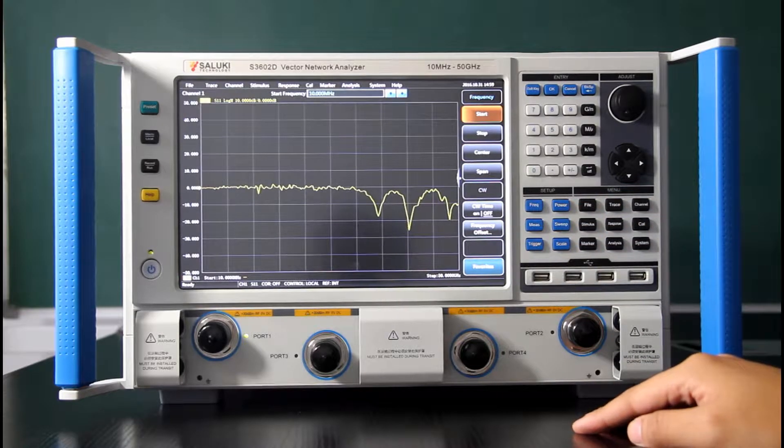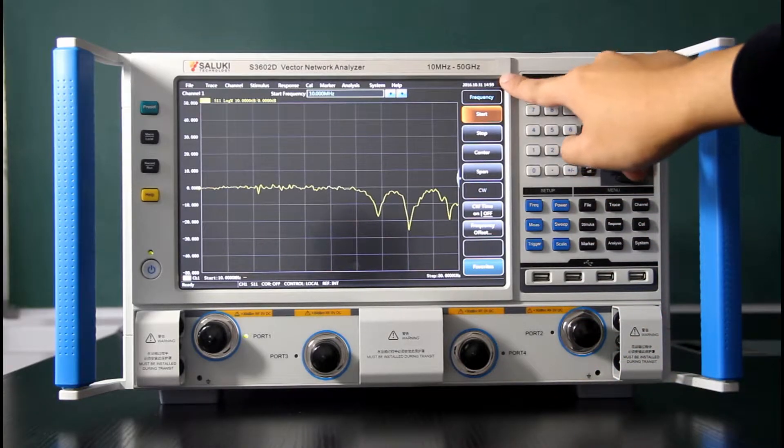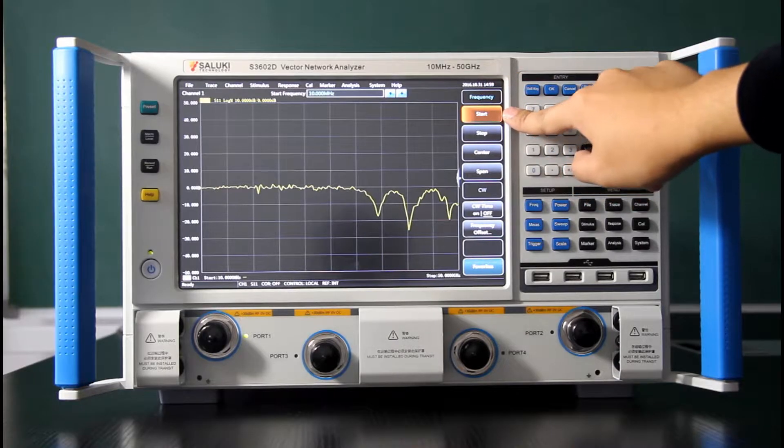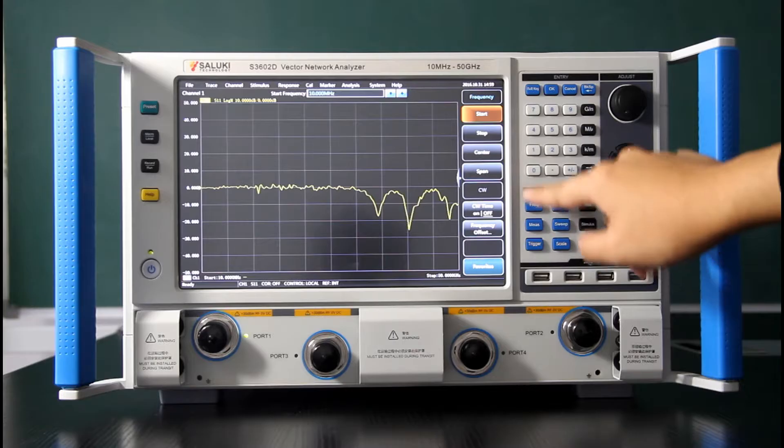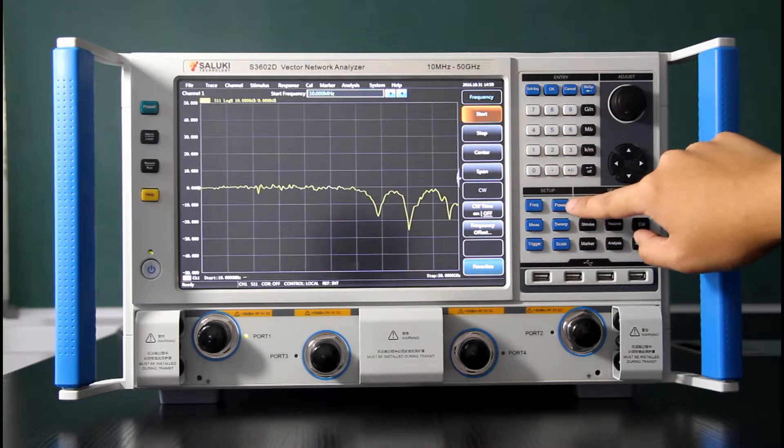Let's press frequency. We will set up the frequency range of your measurement. See, there is a soft panel. Activate. Start, stop, center, span. So you will do the frequency setup here.